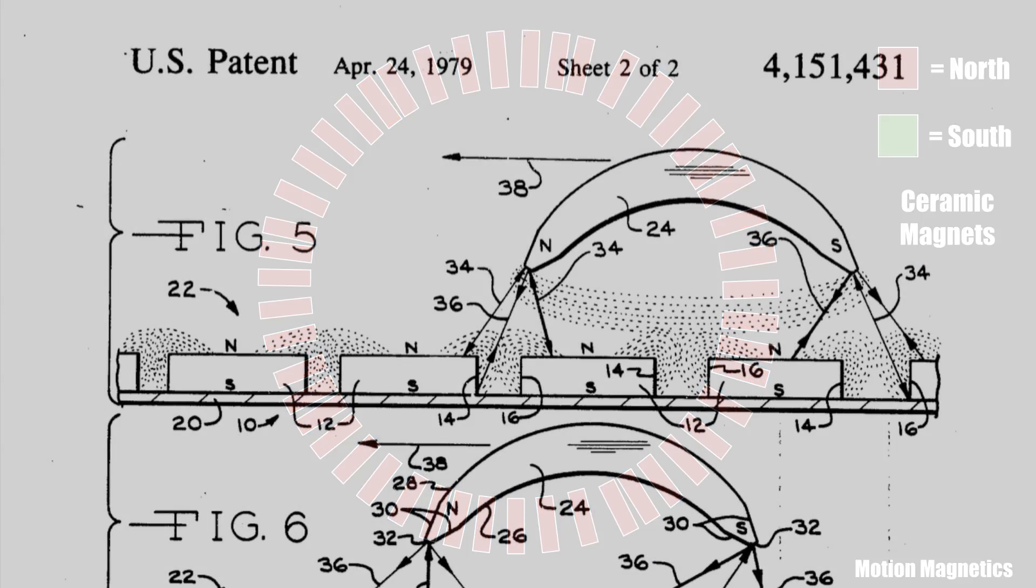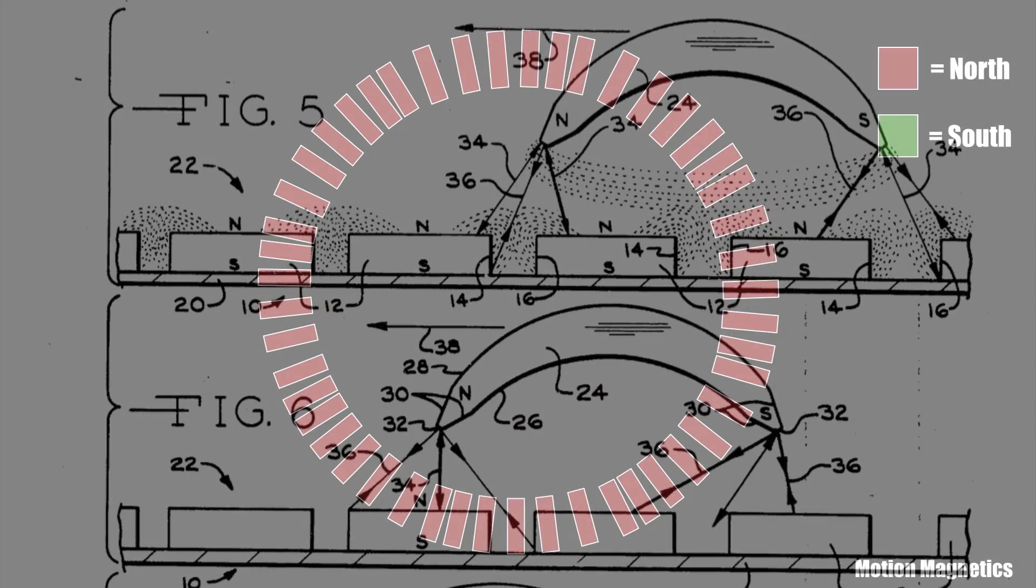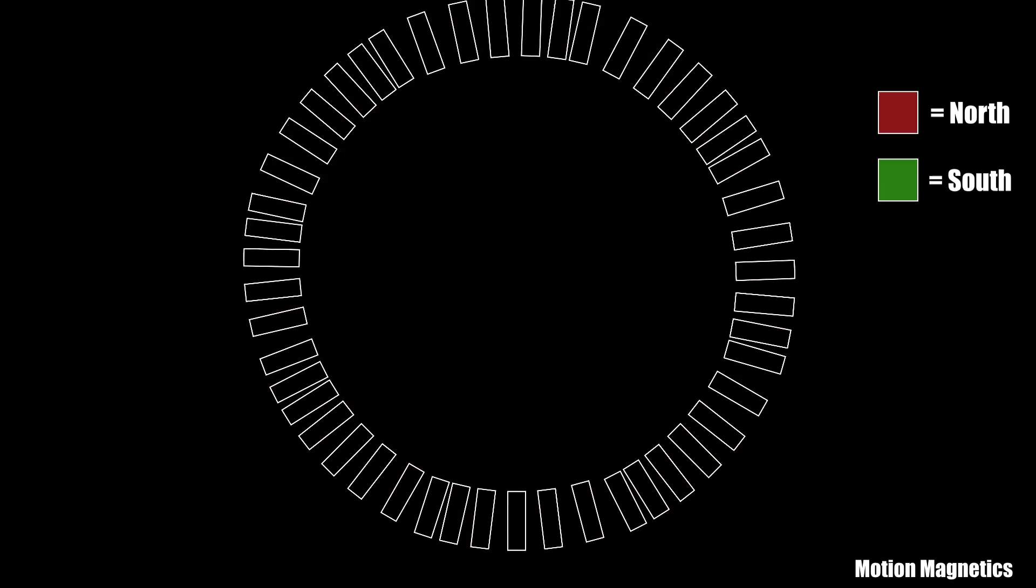So this design employs this principle from Johnson's first magnetic motor patent. When you gradually decrease the spacing between the magnets and shield the opposite poles in order to aid in the rotation of the device, the direction of the rotor magnets determines the direction it will spin.